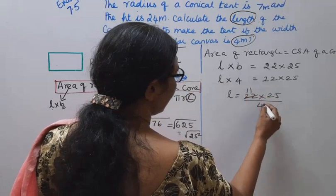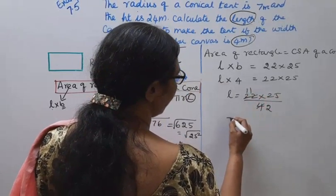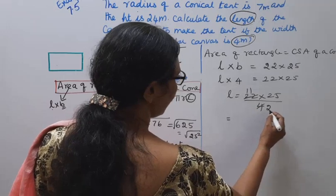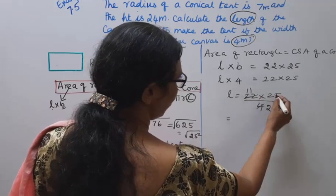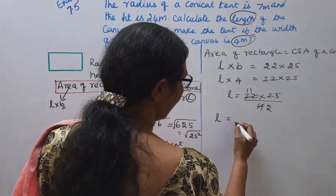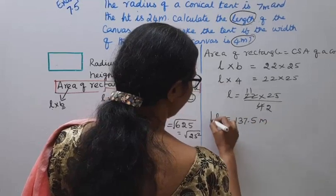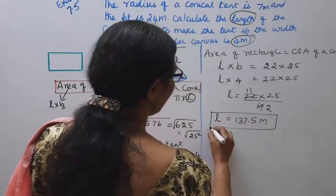Cancel to get 11 and 2. Then 11 × 25 ÷ 2. L equals 137.5 meters.